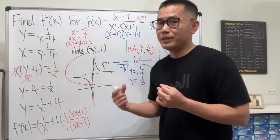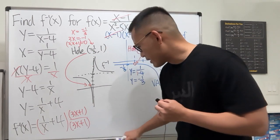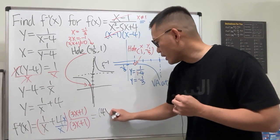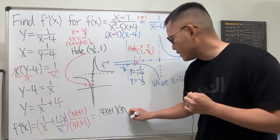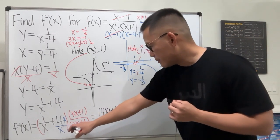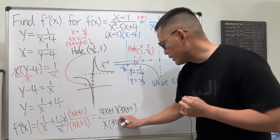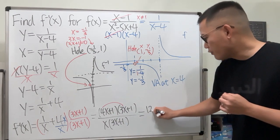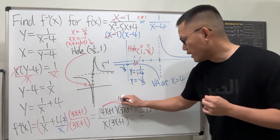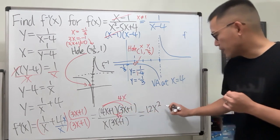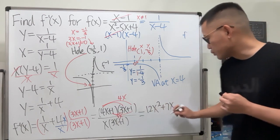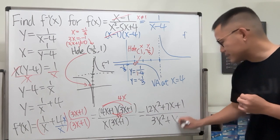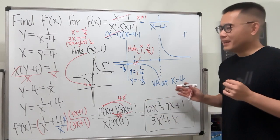Combining everything with a common denominator: the top becomes (4x plus 1)(3x plus 1), which expands to 12x squared plus 7x plus 1. The bottom is x times (3x plus 1), which distributes to 3x squared plus x. So the full inverse expression is (12x squared plus 7x plus 1) over (3x squared plus x).